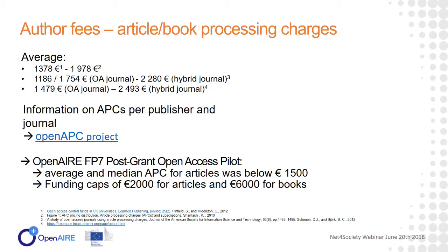A word on article and book processing charges: not every open access journal charges — about 60% do not charge. Many open access journals run by institutions or nonprofits do not charge. However, in most legacy publishers, journals do ask for these charges. These charges are eligible costs in your project budget, so it is useful when writing a budget to make an estimation of the number of publications you might make and include article processing charges in your project.